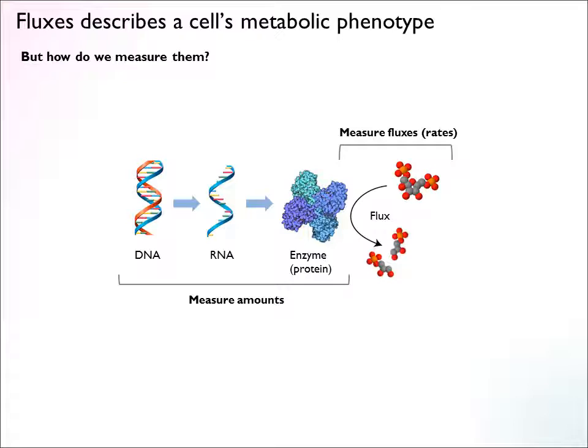But in metabolism we're usually interested in looking at the activities of an enzyme — measuring not the amounts of metabolites but the rate at which one metabolite is being converted into another. These rates are the metabolic fluxes, and this is really a cell's metabolic phenotype.